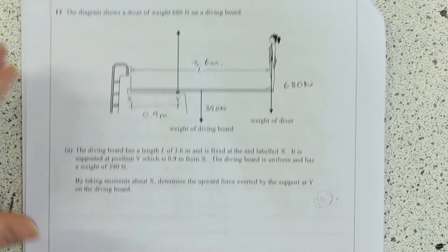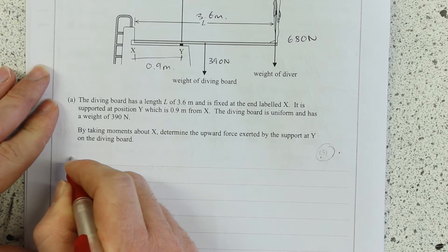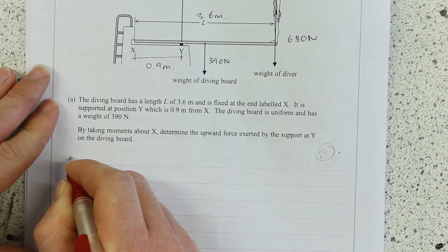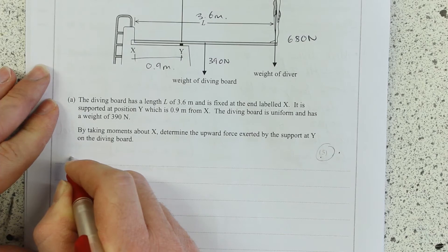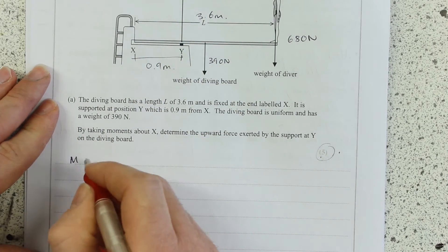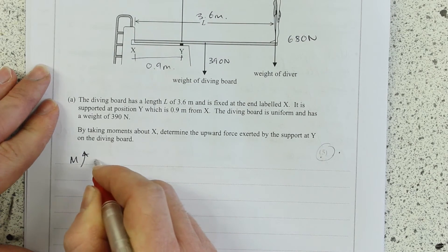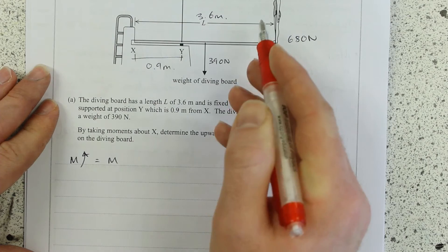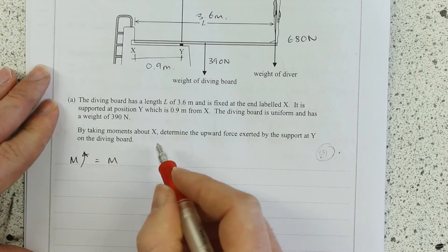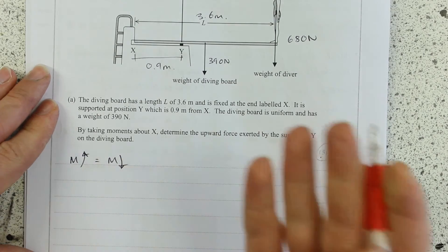With moments, you need to just remember that the sum of the anticlockwise moments equals the sum of the clockwise moments. So around x, y is anticlockwise, and the weight of the diver and the weight of the diving board are clockwise moments. So that's all that is.